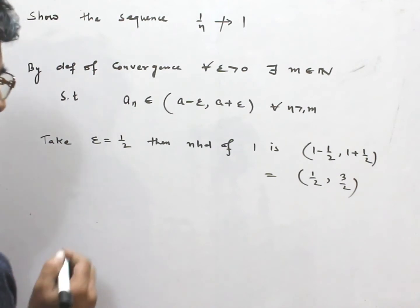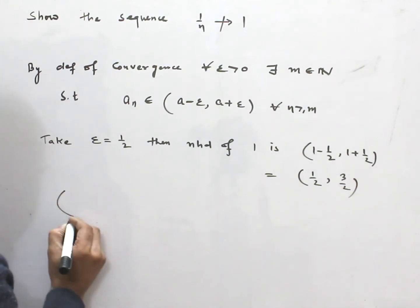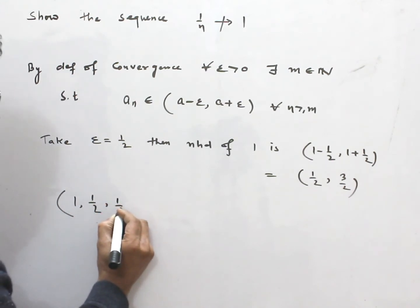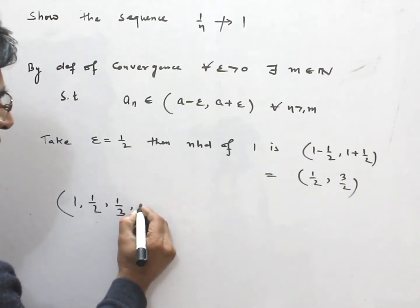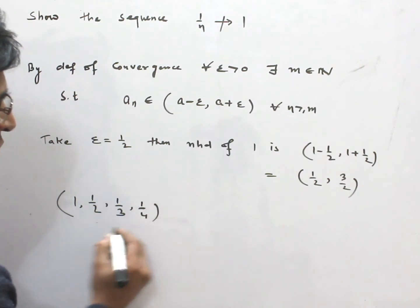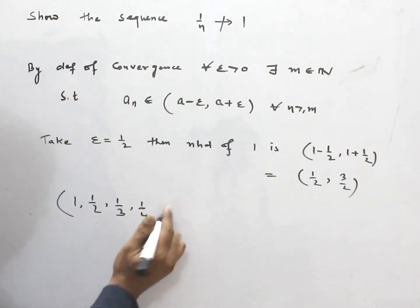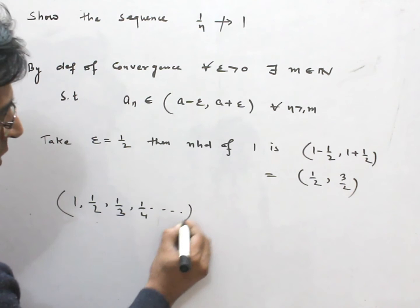terms of this sequence are 1, 1/2, 1/3, 1/4, and so on. Now,